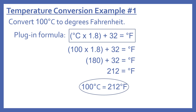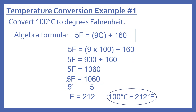180 plus 32 is 212, so 100 degrees Celsius equals 212 degrees Fahrenheit. Now using the algebra formula for the same example: our formula is 5F equals 9C plus 160. We plug in our Celsius temperature, giving us 5F equals 9 times 100 plus 160.